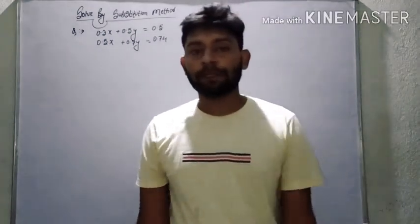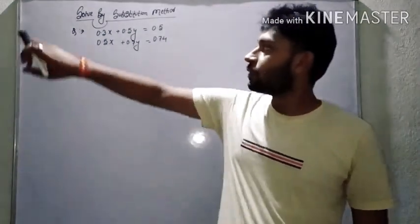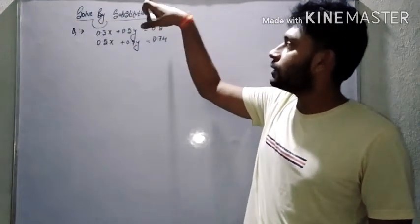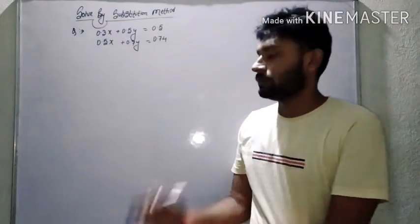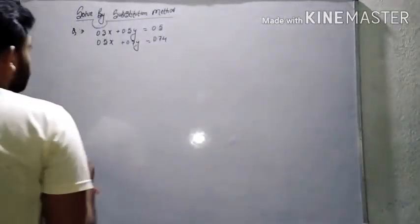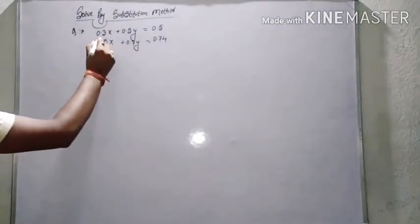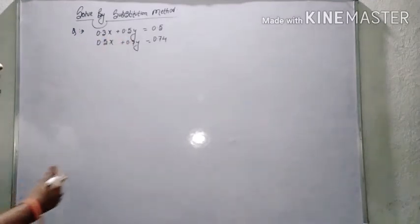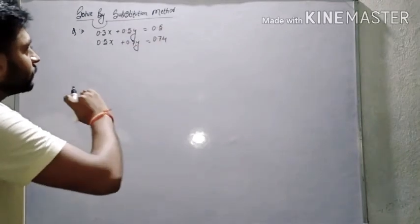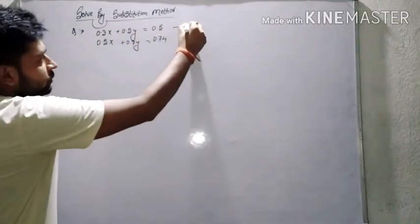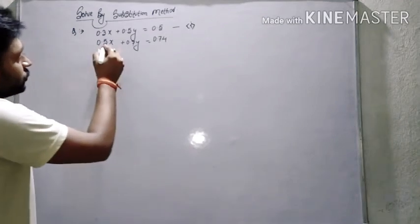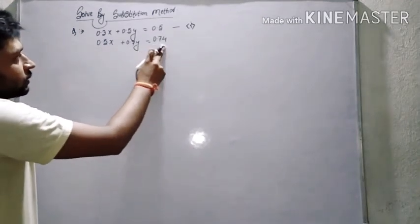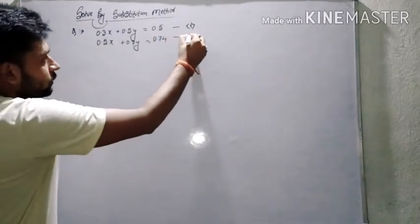Hello everyone. In this video, let's start. First of all, 0.3x plus 0.5y is equal to 0.5 — Expression 1 — and 0.5x plus 0.7y is equal to 0.74 — Expression 2.